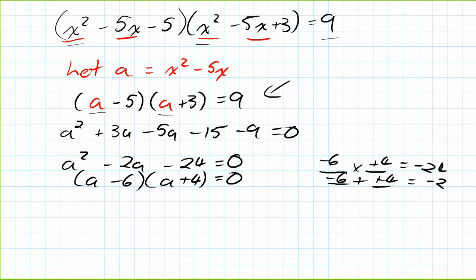In fact, in this case we can solve for a. We can say a - 6 = 0, we split it into two equations, and a + 4 = 0. So we get a = 6 and a = -4. Great, we solved for a. The problem with that is a is actually another value here. In this case, a is x squared minus 5x, so we're not done. We need to...